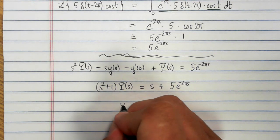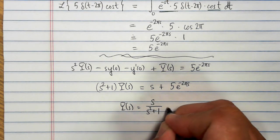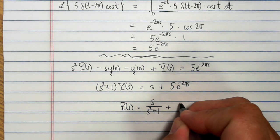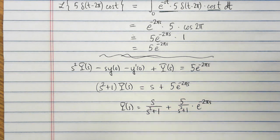Then dividing, we get y of s is equal to s over s squared plus 1 plus 5 over s squared plus 1 times e to the minus 2 pi s.